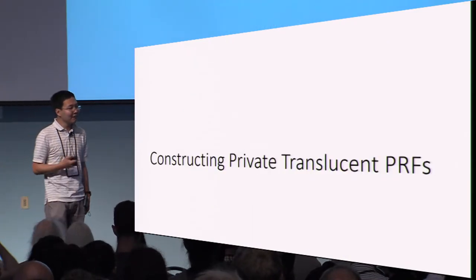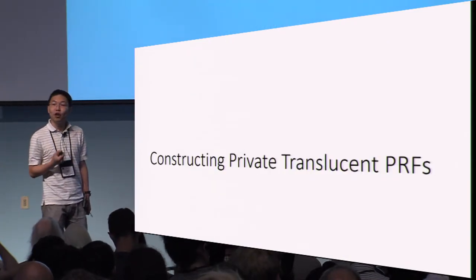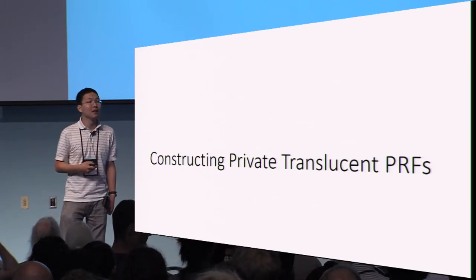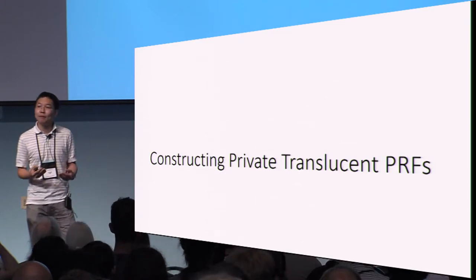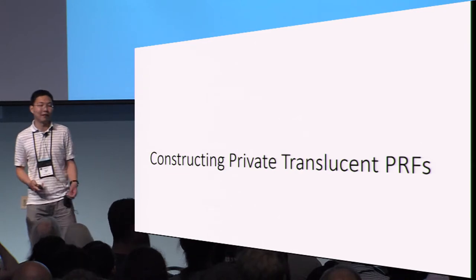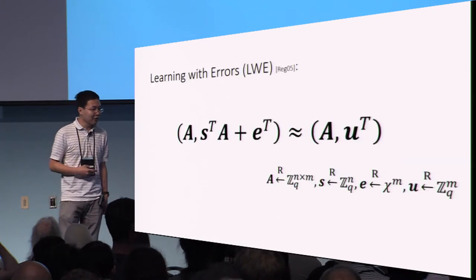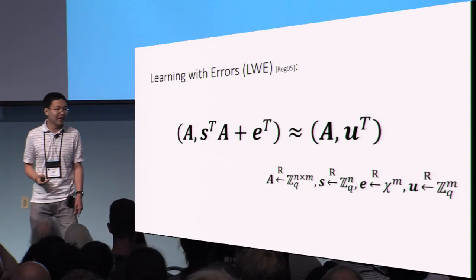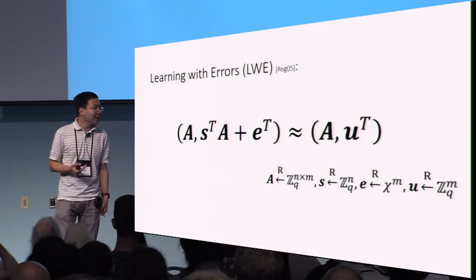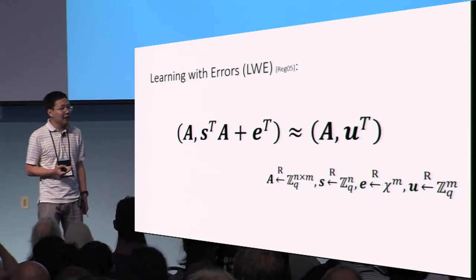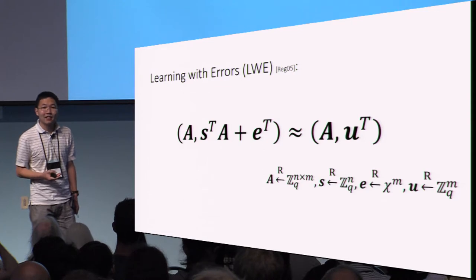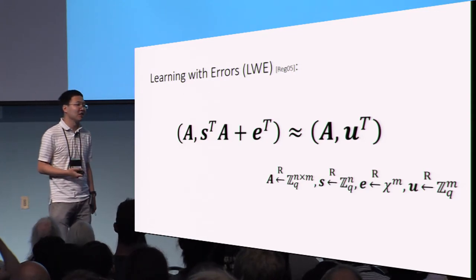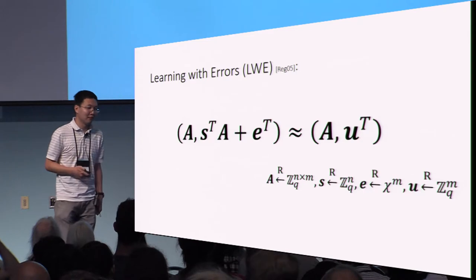In the remainder of this talk, I will tell you how we actually build private translucent PRFs from standard lattice assumptions, thus completing the picture of how we build cryptographic watermarking from lattices. Because this is a construction based on lattices, let me first start by reminding you what the LWE assumption says. Given a uniformly random matrix A, the LWE assumption basically states that a noisy linear combination of the rows of A looks computationally indistinguishable from a uniformly random vector.